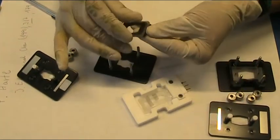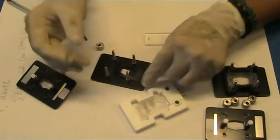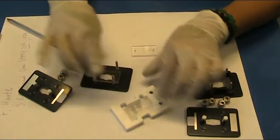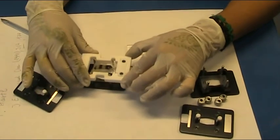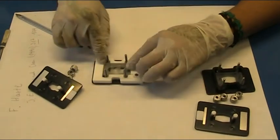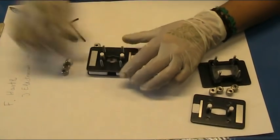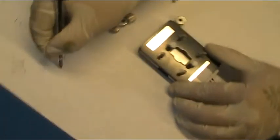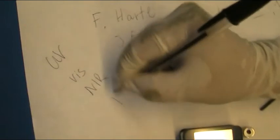These are calcium fluoride windows. And this makes the cell, the spectroelectrochemical cell, useful to be used in the UV-Vis, NIR and IR.